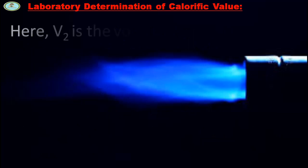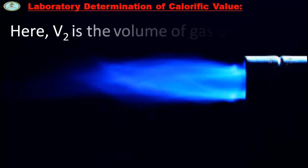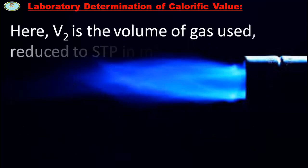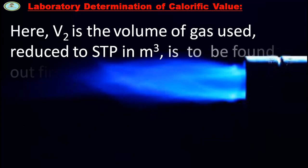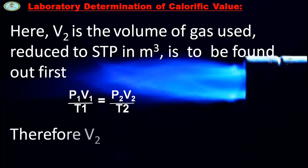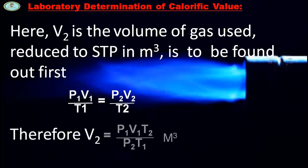The heat generated by combustion is partially absorbed by the water in the calorimeter and partially by the metal of the bomb and calorimeter; the water equivalent of the bomb and calorimeter is usually furnished by the manufacturer. To find the volume of gas used at STP (V2), use: P1V1/T1 = P2V2/T2, so V2 = P1V1T2 / (P2T1) in cubic meters.